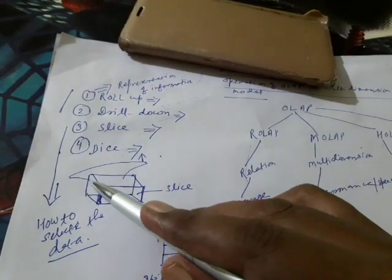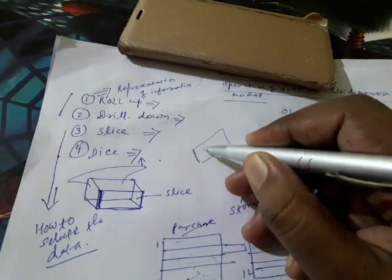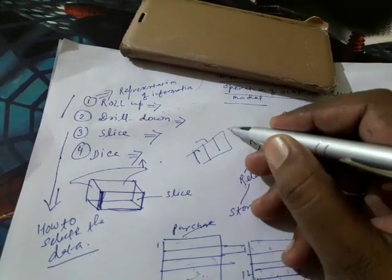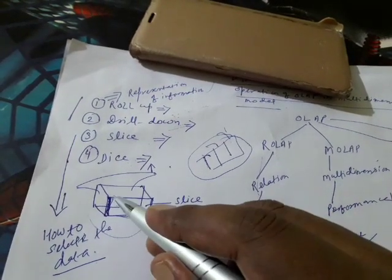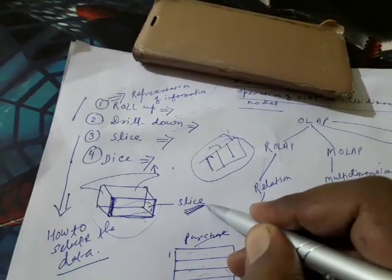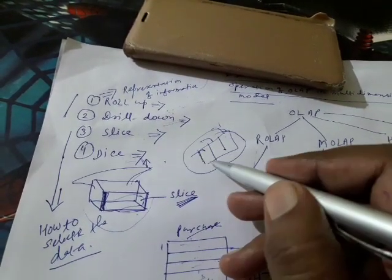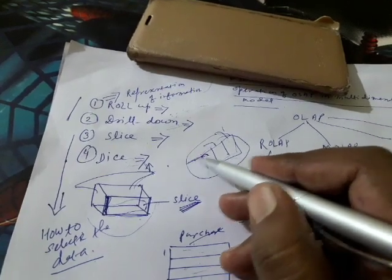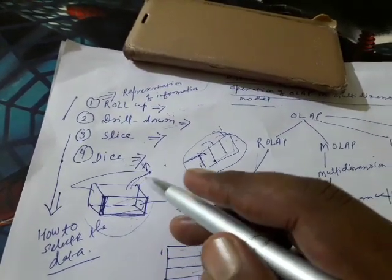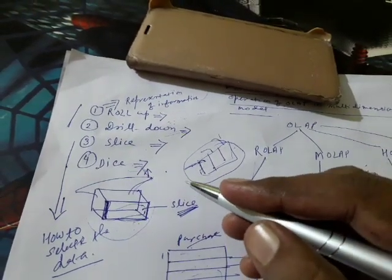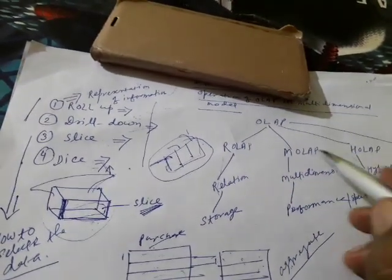Slice means: if there is a big dataset, think of it like a loaf of bread — you slice it into part one, part two, part three. The same thing happens with multidimensional data. If you take only one view of the data, it becomes a slice. But if you take more than one view, it becomes a dice. Dice is like a physical die — you can see the front, left, and top faces simultaneously, not all faces at once.